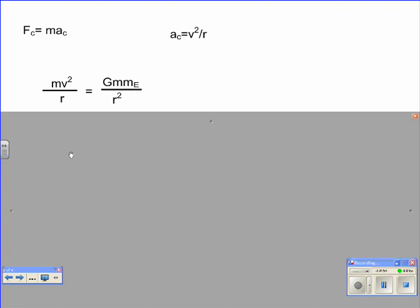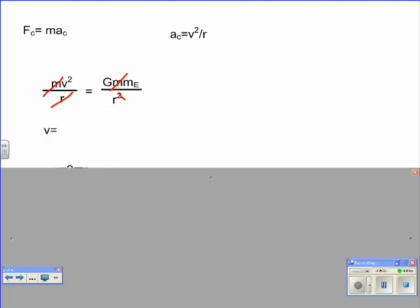Now, how could I simplify that? I want to simplify that so I can figure out how fast do I need to launch my satellite in order to get it into orbit. I can start doing cross-multiplying. What can fall out of my equation right away? The m's, this r, and one of those r's.